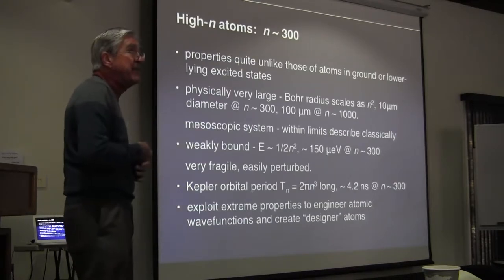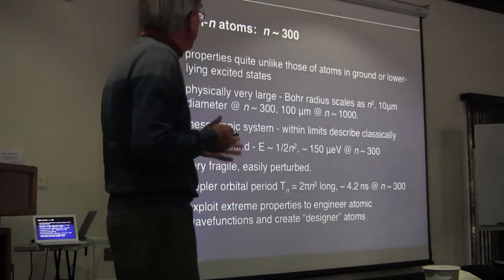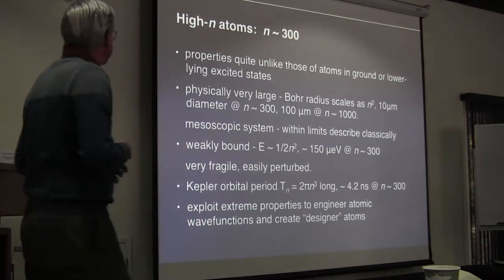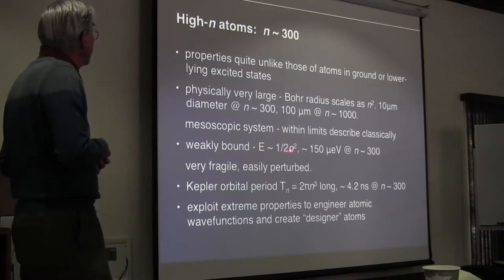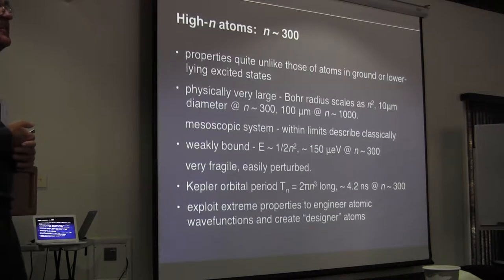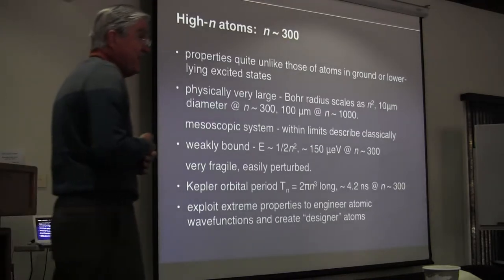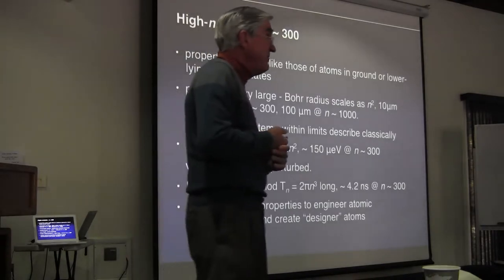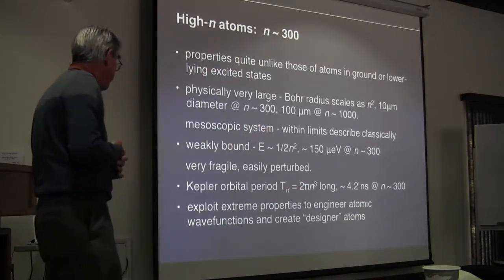You might expect that you could describe its behavior classically, and that is true within limits I will talk about. Of course, they're very weakly bound. In atomic units, the energy scales as 1 over 2n squared — about 150 microvolts at n equals 300. So these things are large, they're very weakly bound, so they're very fragile, and being fragile, they're very easily perturbed. This is one of the things we take advantage of.